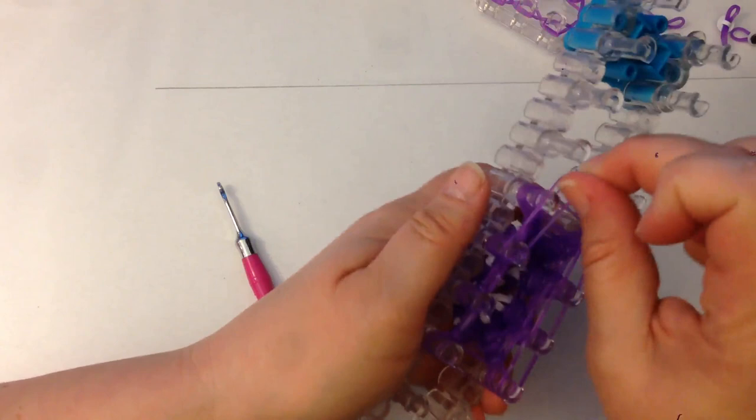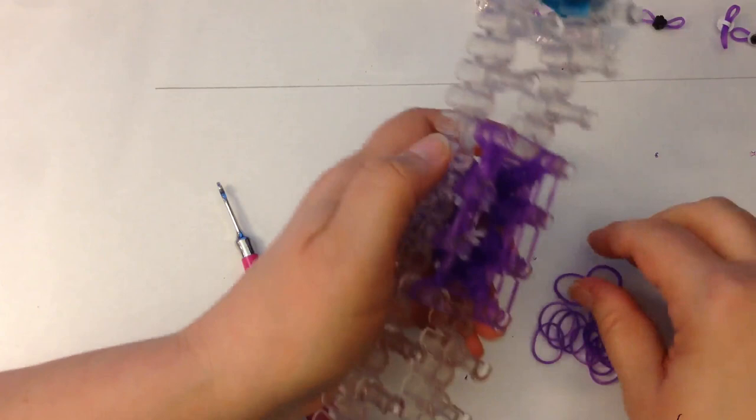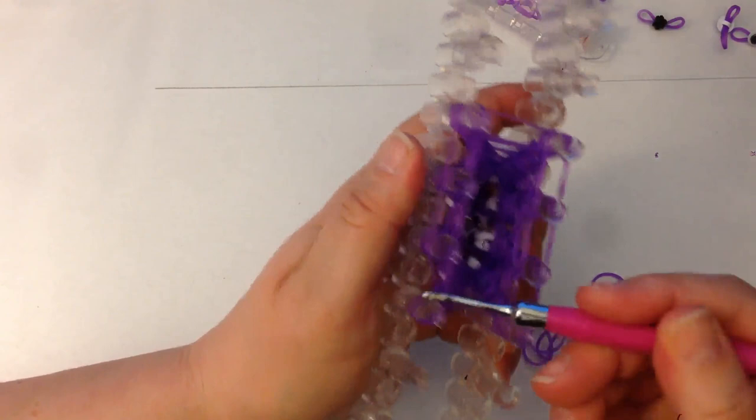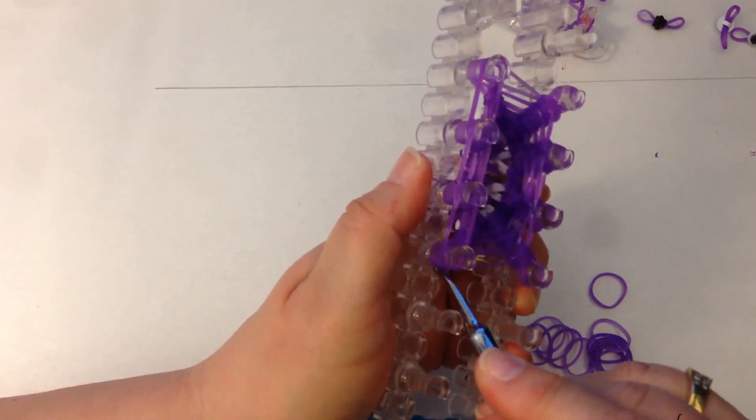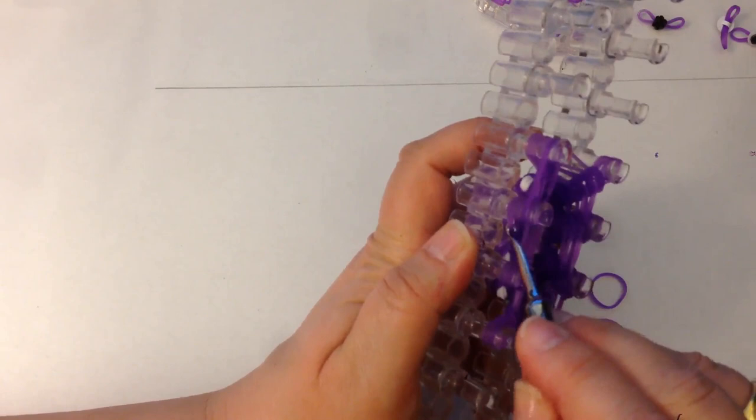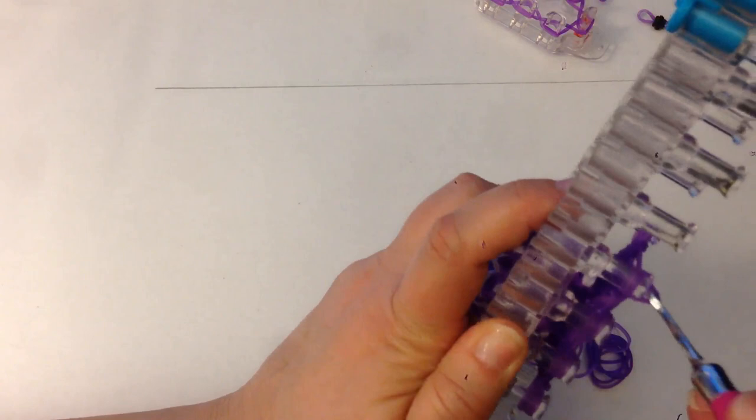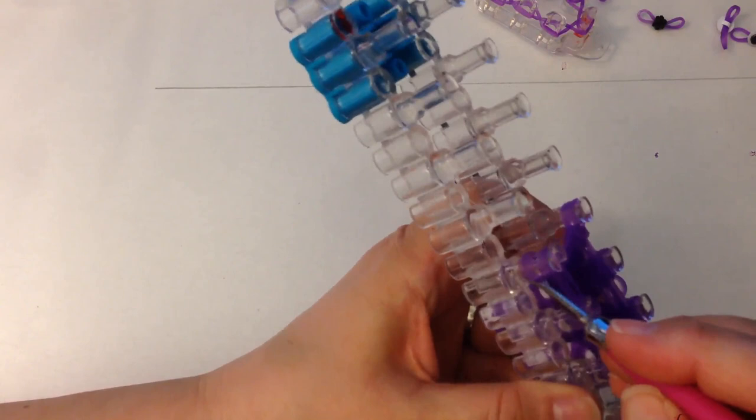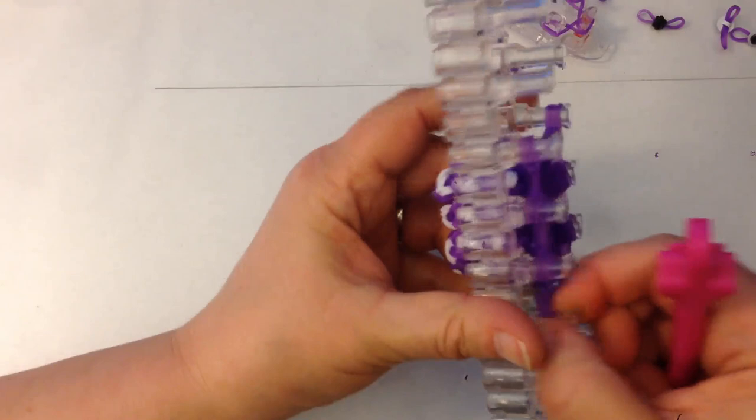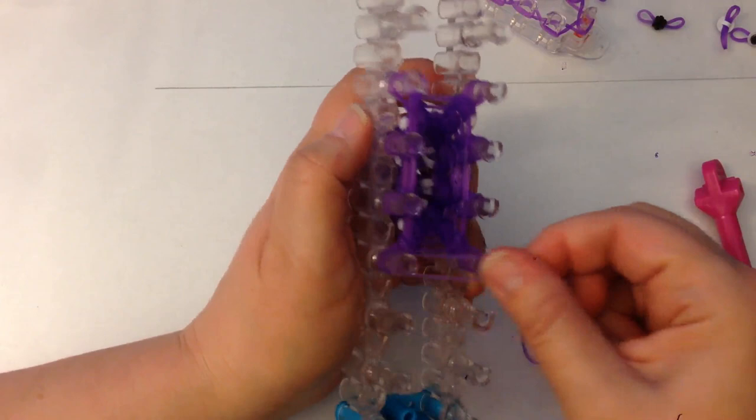Push everything down and make sure you've just got four bands left on each peg. That was six. We're doing seven. Let's do eight. This is the last one. Oh, took too many there. Just two. There we go.